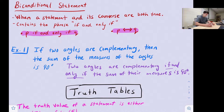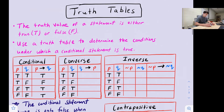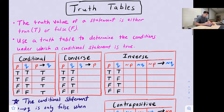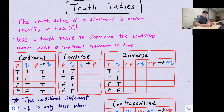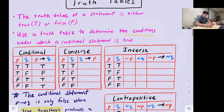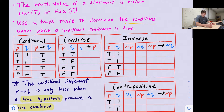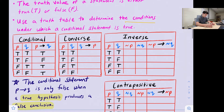Along with biconditional statements, we have what are called truth tables. Truth tables are a way to look at the truth value of a statement, or to determine the conditions under which a conditional statement is true. A statement can either be true or false. We have four different types of statements: the conditional statement, the converse, the inverse, and the contrapositive.